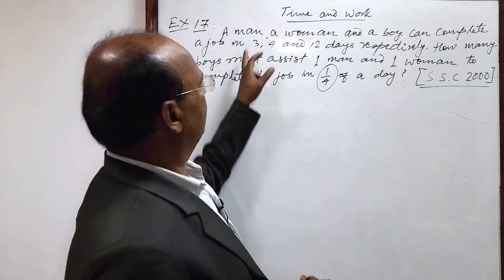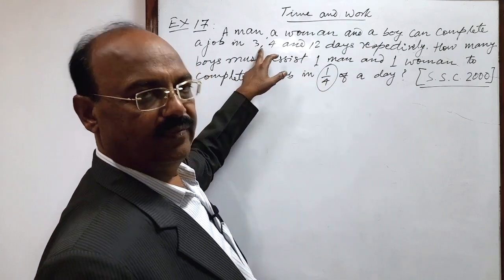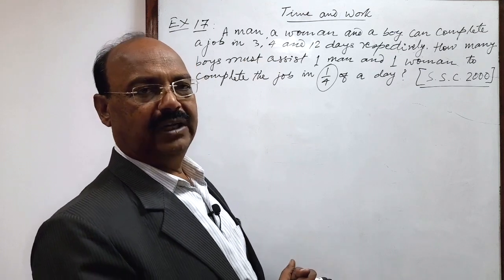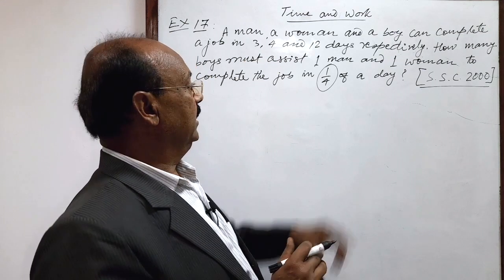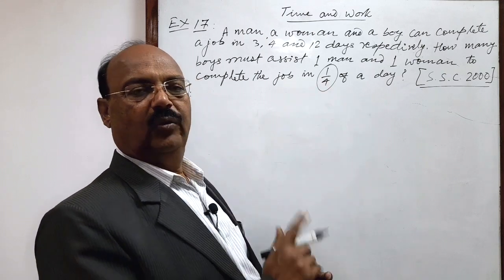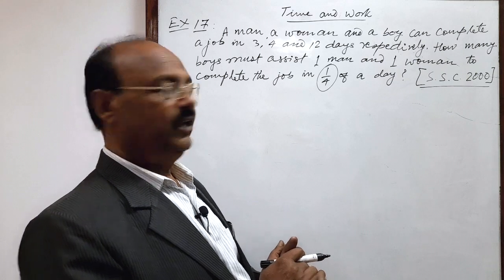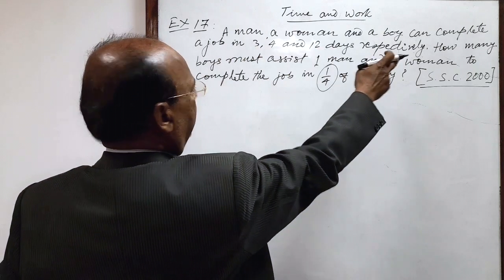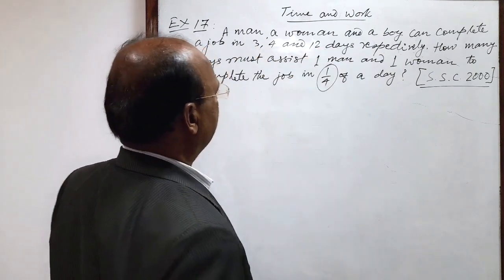So you see, a man can complete a job in 3 days. So what is the amount of job done by a man in 1 day, 1 by 3 and in 1 by 4th day, 1 by 3 into 1 by 4 means 1 by 12. So let us write here, solution: a man, a woman and a boy can complete a job in 3, 4 and 12 days respectively.